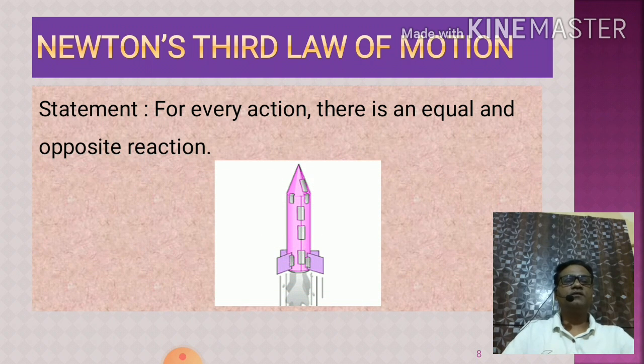This can be shown by this rocket. You see the fuel is burnt in the rocket, it is ejected in backward direction and rocket gains momentum in forward direction. Means action and reaction are equal here.